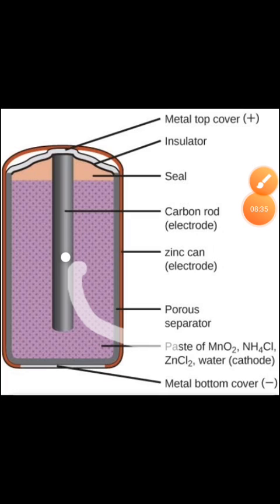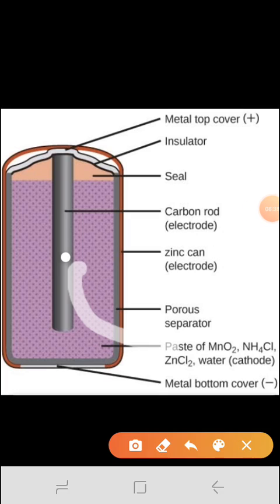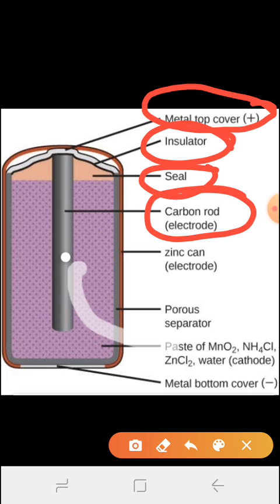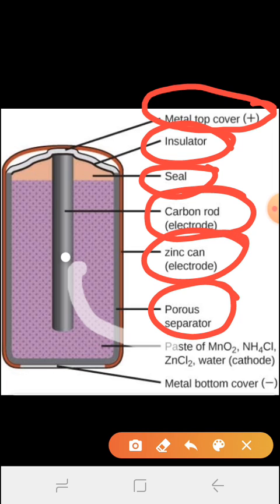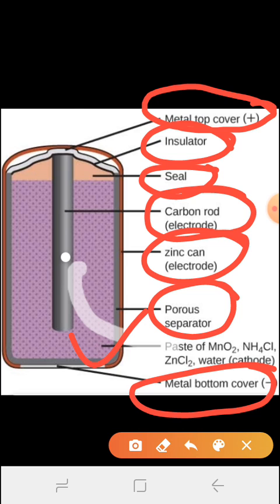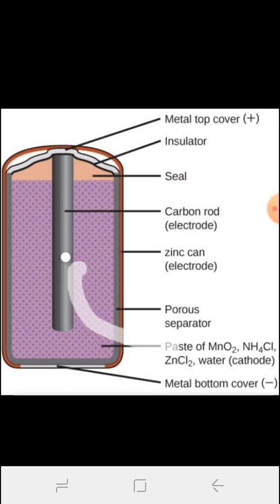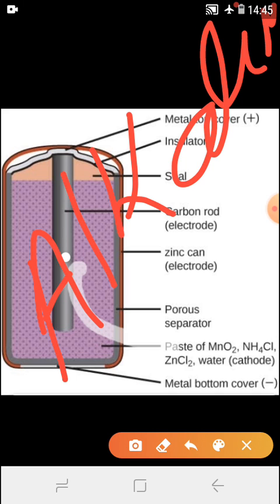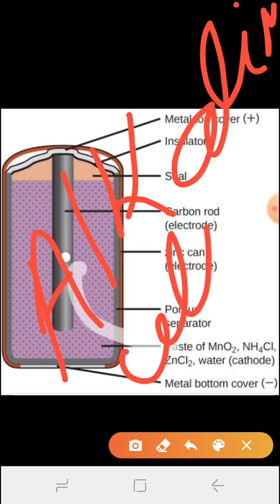Looking at the alkaline cell figure: it shows the positive terminal, insulation, carbon rod for electrolyte, zinc can, electrolyte, porous separator, paste of manganese oxide MnO2 and NH4Cl, zinc chloride, water, cathode, and metallic bottom as the negative terminal. This is the alkaline cell.